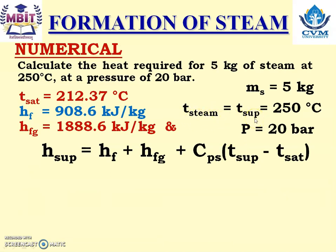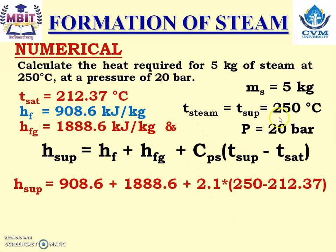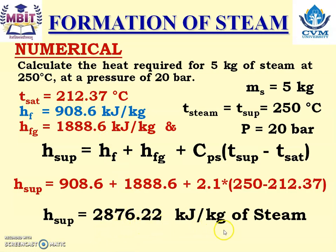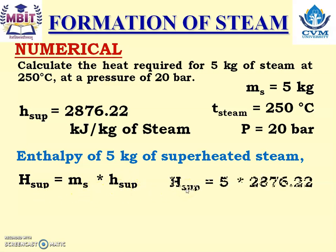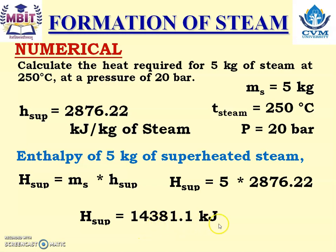The equation is: H_sup = Hf + Hfg + Cp_steam × (T_sup − T_sat). Substituting values: Hf = 908.6, Hfg = 1888.6, Cp of steam = 2.1, T_sup = 250°C, T_sat = 212.37°C. So H_sup = 2876.22 kJ/kg. But this is per kg; we have 5 kg of steam. Final answer: H_sup = 5 × 2876.22 = 14,381.1 kJ.